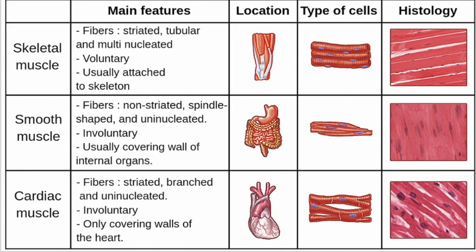Smooth muscles — which is our focus for today — these fibers lack striations, which distinguish them from skeletal and cardiac muscle. The striations found in skeletal and cardiac muscles are created by the banding patterns of thick and thin filaments in the sarcomeres. In smooth muscles, there are no striations because the thick and thin filaments, while present, are not organized in sarcomeres like they are for the other muscles.